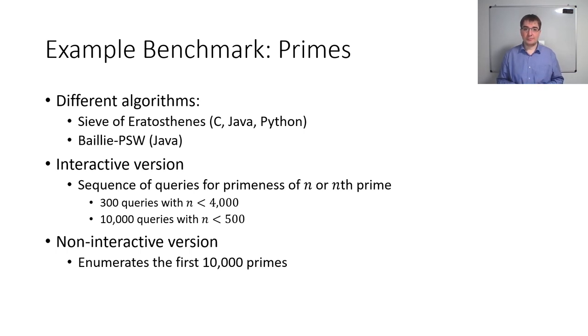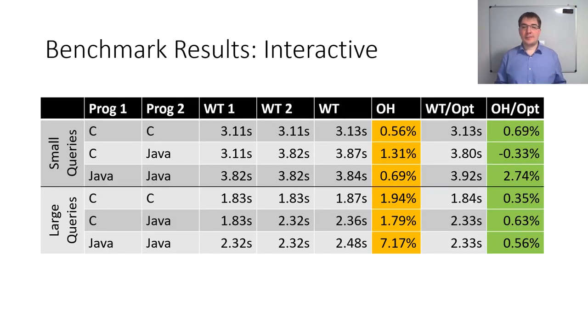So let's look at the results. For the interactive benchmarks, we ran the C version of the Sieve of Eratosthenes against the Java version of Bailey-PSW. As you can see in the middle columns, the running times for just running the single program are relatively close together. In the third to last column, also colored in orange, you can see the overheads of running the various combinations in a differential monitoring setup. In the last column, also colored in green, you can see the same overheads under the optimization that doesn't stop programs when they are trying to write. Overall, the overheads are relatively low in all cases. The optimization gives us some benefit for the larger queries where some computational work is installed by waiting for a write to finish.